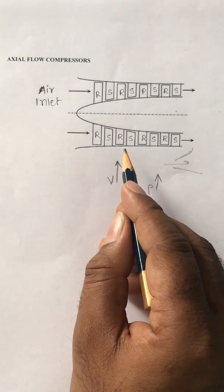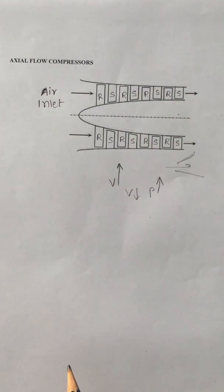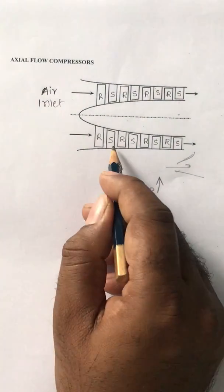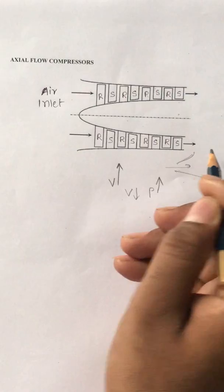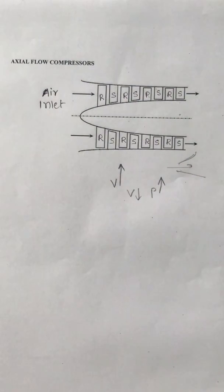Around 1.2 to 1.3, sometimes it may go to 1.4 pressure ratio for each stage. That means if I go to more number of stages, I can increase the pressure ratio from the axial flow compressors. And these axial flow compressors are widely used for gas turbines